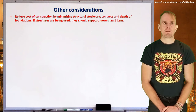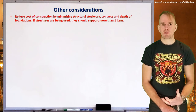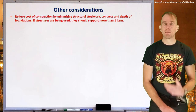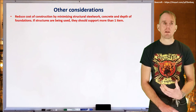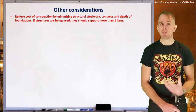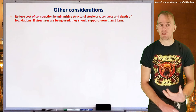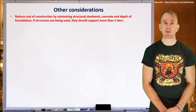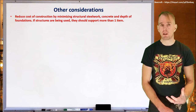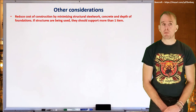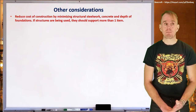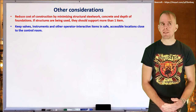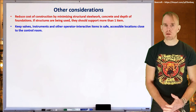Other things to think about: reducing cost. Once you've addressed safety and operation, remember the economics — an economically unviable plant won't be built. Reduce the cost of construction by minimizing structural steelwork, concrete, and where appropriate and in line with correct legislation, the depth of your foundations. If structures are being used, they should support more than one item ideally. Keep valves, instruments, and other operator-interactive items in safe and accessible locations close to the control room.